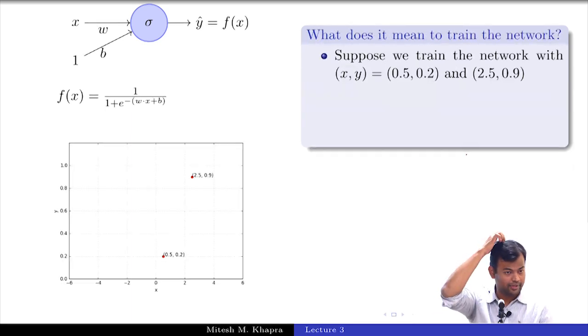Now let me ask you this. I am trying to tell you that I am going to give you an algorithm for training this network. Suppose I have trained this with two data points: 0.5 comma 0.2 and 2.5 comma 0.9. At the end of training I will give you some values of w and b. Let us call them w star and b star. These are the final values of w and b which I have given you. What do you expect from these values? What do you expect at the end of training if I say okay now the network has learned, what do you expect?